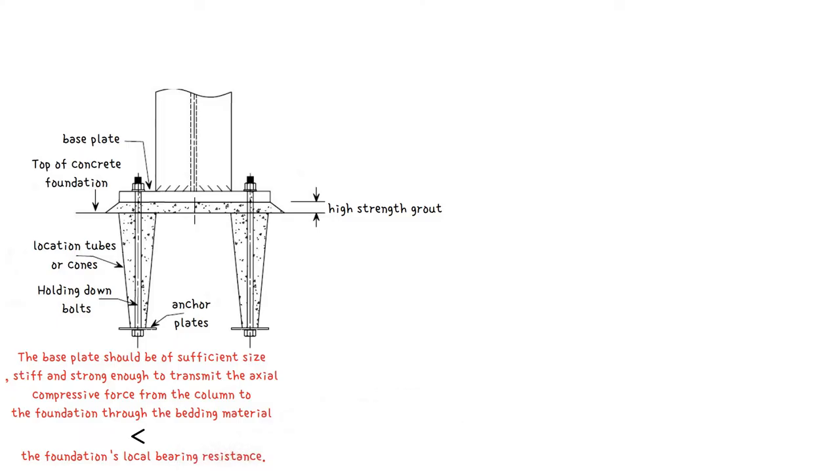Holding down systems are designed to stabilize the column during construction and to resist any uplift in braced bays. In some circumstances, it is presumed that the holding down bolts also carry horizontal shear.